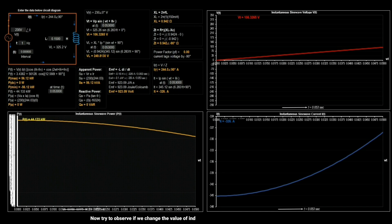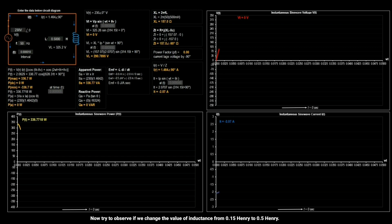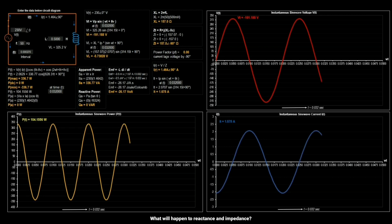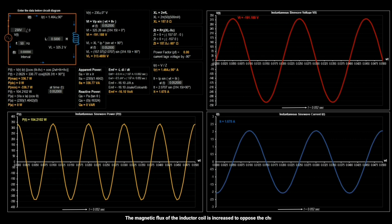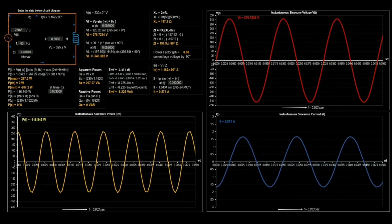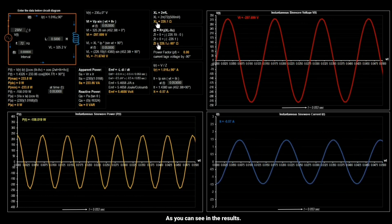Now try to observe if we change the value of inductance from 0.15 Henry to 0.5 Henry. What will happen to the reactance and impedance? The magnetic flux of the inductor coil is increased to oppose the change of current, the reactance and impedance increases when increasing the values of inductance. As you can see in the results.